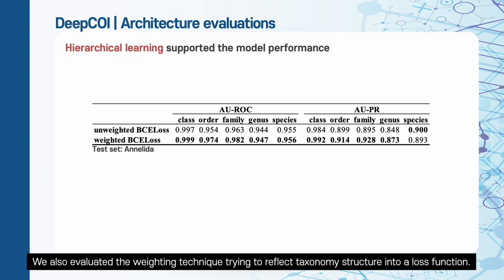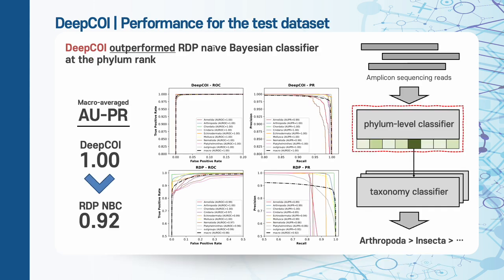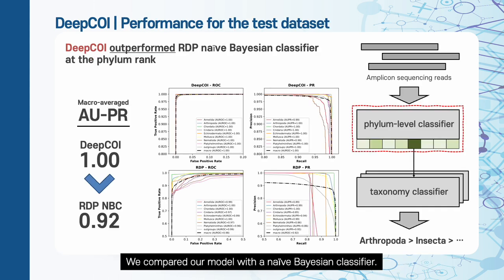We also evaluated the weighting technique trying to reflect taxonomic structure into loss function. It's clear that weighted BCE loss enhanced the model performance for ancestral ranks. We compared our model with a naive Bayesian classifier. Both models were trained using the same data.